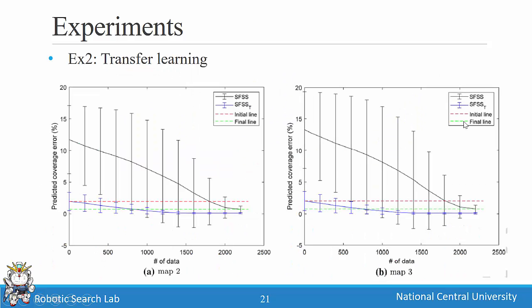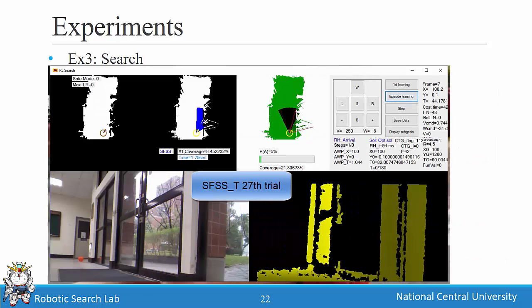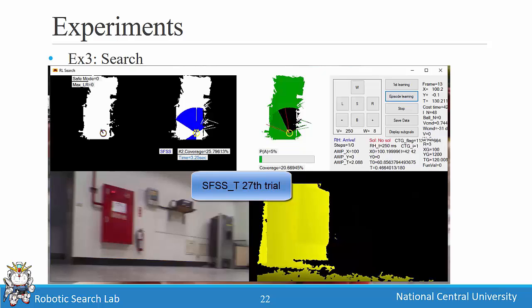For Experiment 2, the transfer learning algorithm achieves better accuracy than the standard SFSS. This experiment shows that providing a good initial Fourier coefficient allows the algorithm to learn the coverage function more accurately.